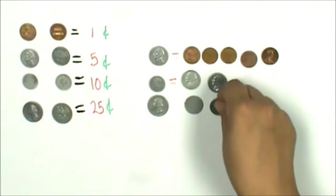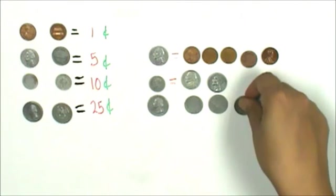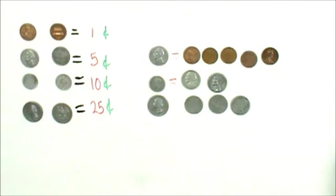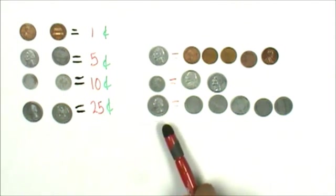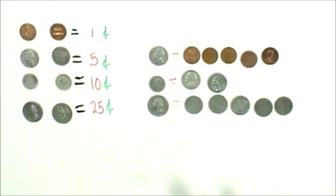5, 10, 15, 20, 25. 1 quarter is equal to 5 nickels.